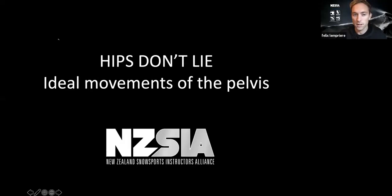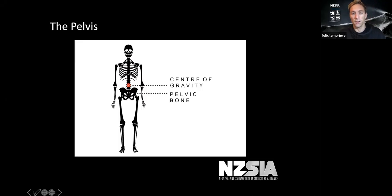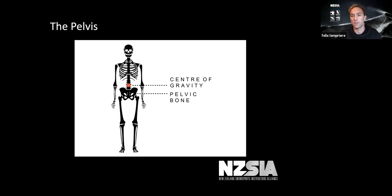So let me do a bit of a screen share — let's jump into it. So the pelvis is a really large bone in the body; it's got a lot of mass and it's like the intersection between the lower spine and the femur bones. The way you use it is really important and has a big impact on movements in your skiing.